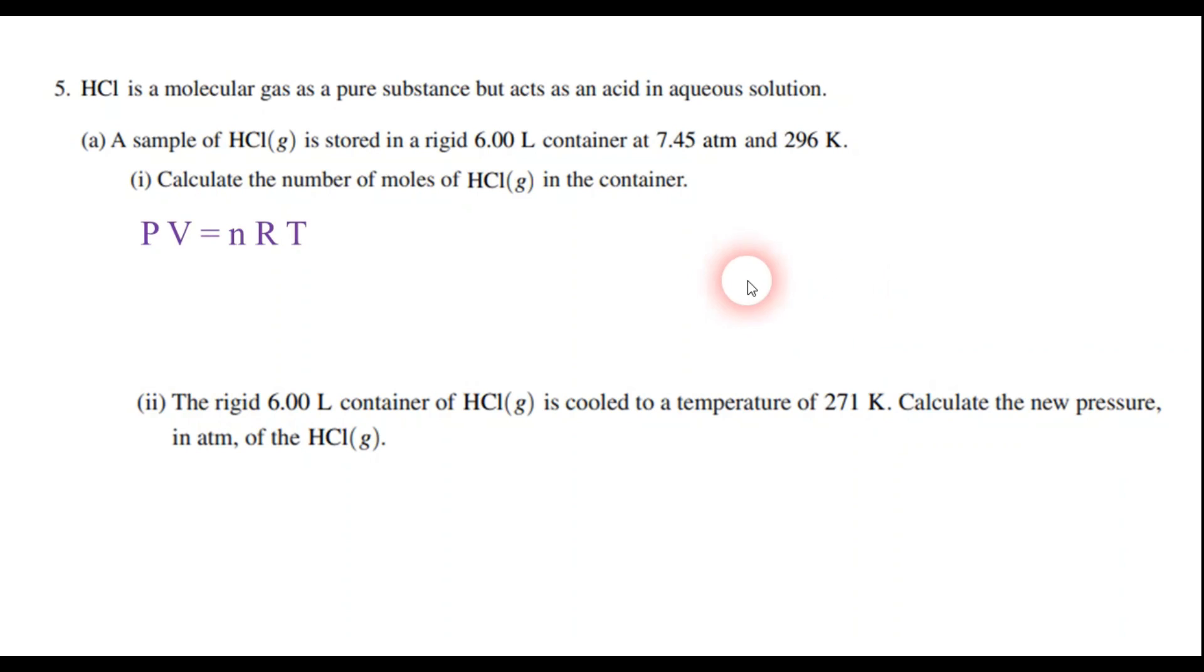So we just plug in those values: the pressure is 7.45 atmospheres, V for volume is 6.00 liters, we're trying to find the number of moles n. R is our ideal gas constant, about 0.08206 liter atmospheres per mole Kelvin. And T is the temperature, given to us in kelvins, which is kind of nice, 296 kelvins.